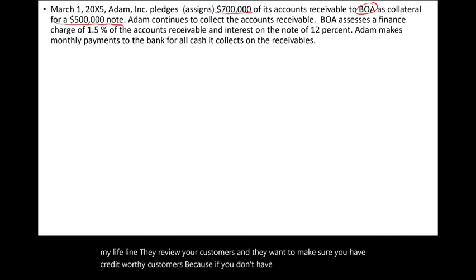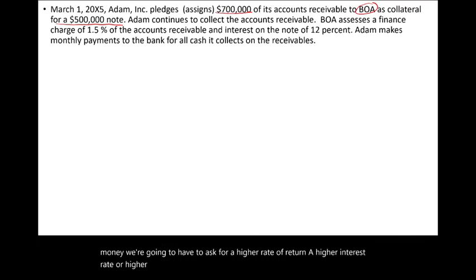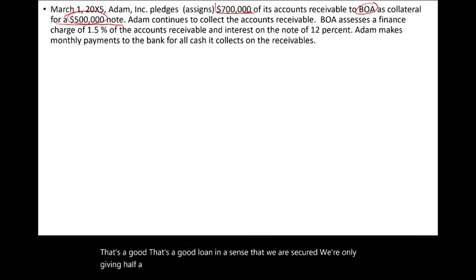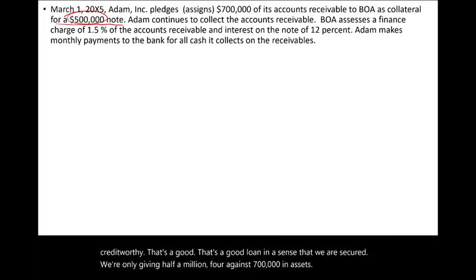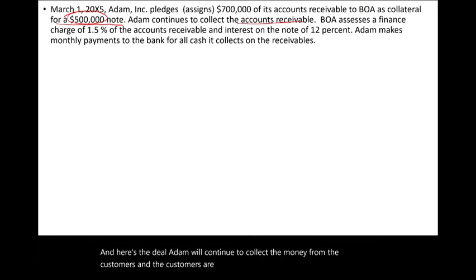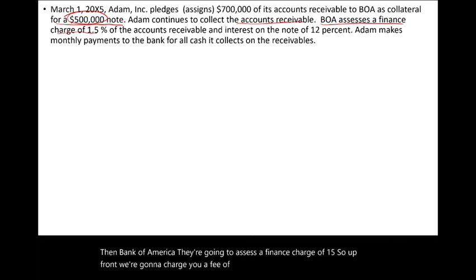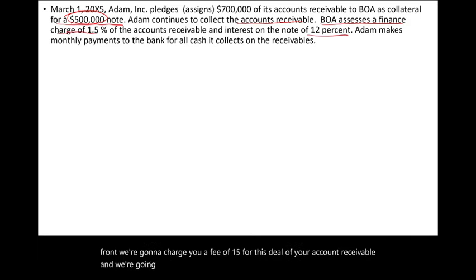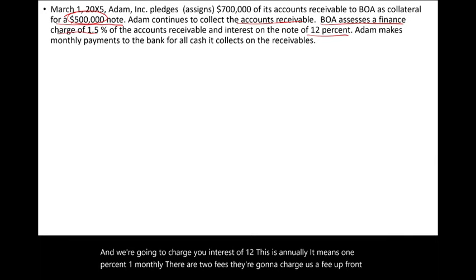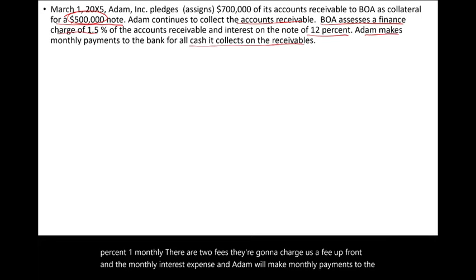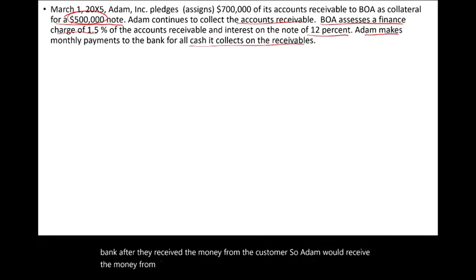If the customers are not creditworthy, the bank will require a higher interest rate or higher fee. But let's assume Adam's customers are creditworthy — that's a good loan in the sense that the bank is secured, lending only $500,000 against $700,000 in assets. Adam will continue to collect money from the customers, and the customers are not even aware of this deal. Bank of America assesses a finance charge of 1.5% up front, and charges interest of 12% annually, which is 1% monthly. There are two fees: an upfront fee and the monthly interest expense.